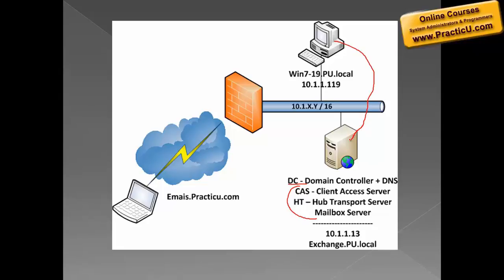Users that connect to our server from within the network will use the inner network name for the server and should be presented a certificate for this inner server name. On the other hand, anyone who wants to access our server from outside of our network will use the outer server name, and we will need to present this user the security certificate for that outer name. So now we need two certificates for two server names. Of course we do not want to do that, but perhaps we can include two names in one certificate. Classic certificates cannot do this, however it can be done using SAN certificates.